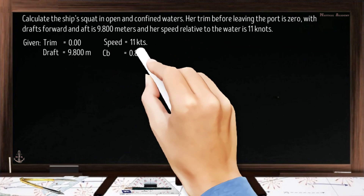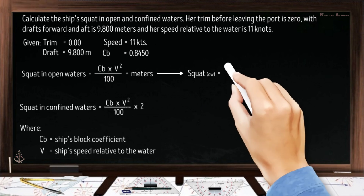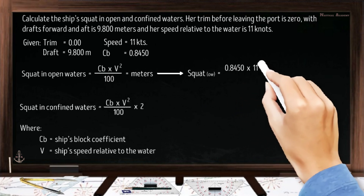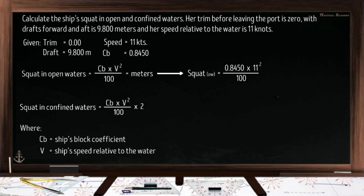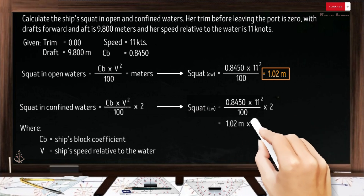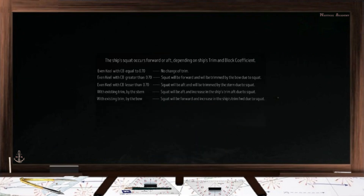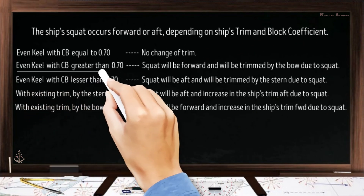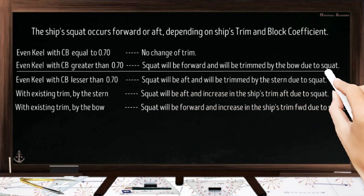We will now calculate the squat using these formulas. For squat in open waters: CB × V² ÷ 100 = 0.8450 × 11² ÷ 100 = 1.02 meters. For squat in confined waters, we multiply the open water squat by 2: 1.02 × 2 = 2.04 meters. Since the ship has zero trim and a block coefficient greater than 0.70, the squat will take place forward and she will be trimmed by the bow due to squat.